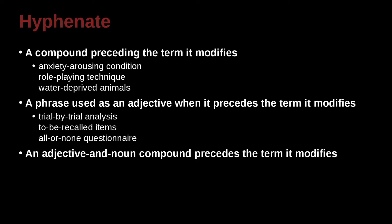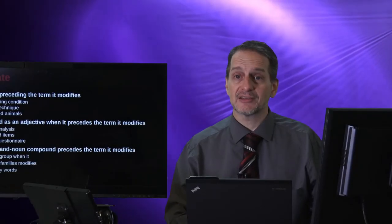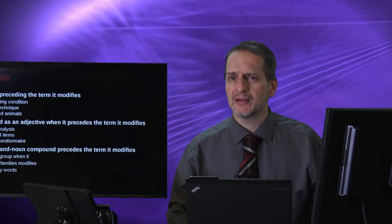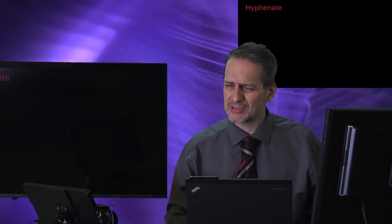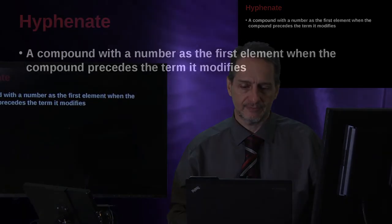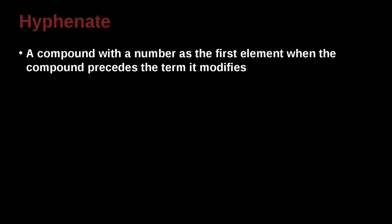You can also do this when you have an adjective and noun compound that precedes the term it modifies. For example, high-anxiety group, middle-class families, low-frequency words. You can see the same idea. This is very normal in your research, but you don't want to go crazy with it and be putting this everywhere. Make sure that it really is just to help the flow of your reading. And I think it's especially helpful when we're talking about things like the methodology of your research because that can at times get complicated with many of these words that are strung together.